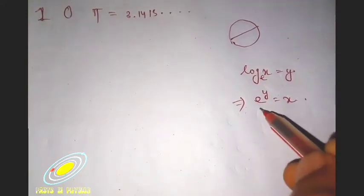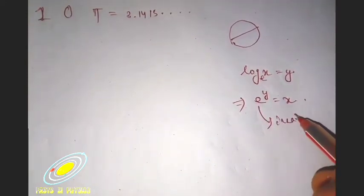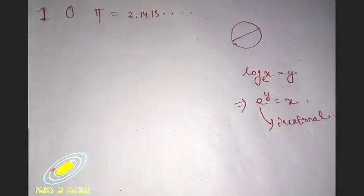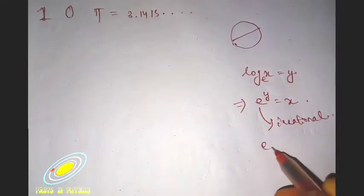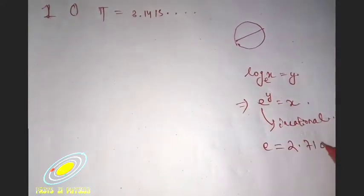This e is an irrational number and the value of e is 2.71828459 and so on.